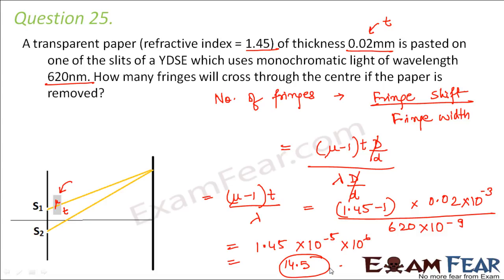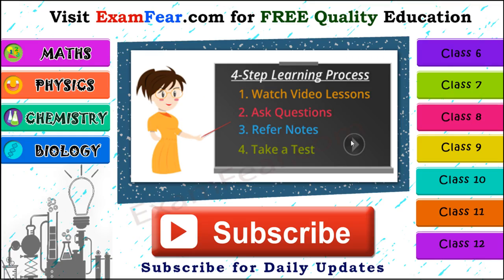With this we have reached the end of this lesson on wave optics. From an exam perspective, three topics are extremely important in this chapter: Young's double slit experiment, diffraction, and the resultant interference when two waves superimpose. Questions in previous years' papers have been asked from one of these topics, so please prepare these topics properly. I hope this video on the wave optics series has been useful to you. See you all in the next lesson. Thank you.